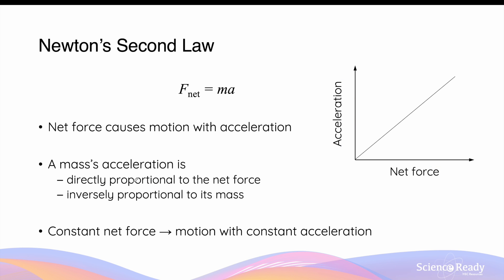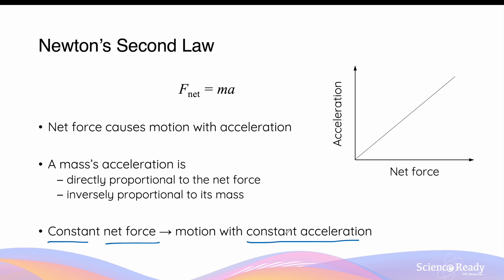The mass's acceleration by Newton's second law is also inversely proportional to its mass, which means if you have the same net force acting on two different objects, the object with a heavier mass will experience a smaller acceleration, and the object with a lighter mass will experience a greater acceleration. This also means when an object is acted upon by a constant net force — that is, a net force that is not changing — it will undergo motion with constant acceleration.